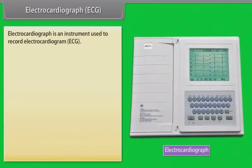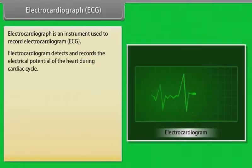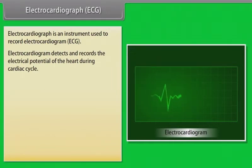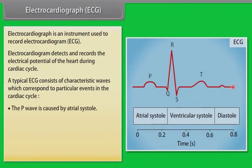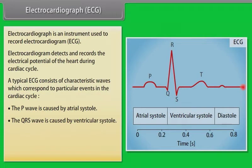An electrocardiograph (ECG) is an instrument used to record an electrocardiogram. It detects and records the electrical potential of the heart during the cardiac cycle. A typical ECG has characteristic waves: the P wave is caused by atrial systole; the QRS wave by ventricular systole; and the T wave coincides with ventricular diastole. Heart rate can be calculated from the interval between consecutive P waves.